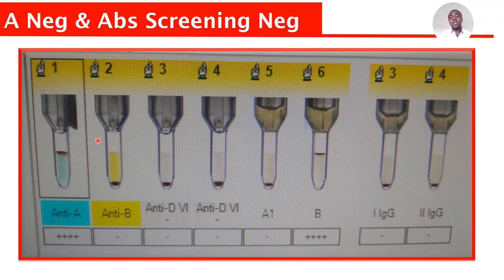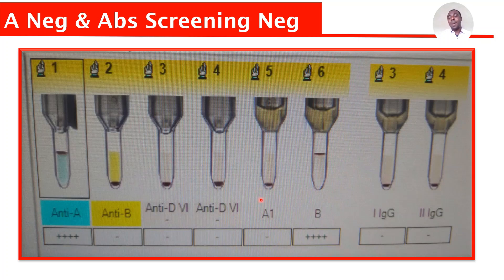This patient reacted on anti-A, meaning it has antigen A. And because it reacted on the B cell, meaning it has antibody B, this patient is blood group A. Because there is no reaction with anti-D, meaning it does not have antigen D, this person is blood group A negative. Remember, antigen D determines whether the blood group will be positive or negative.